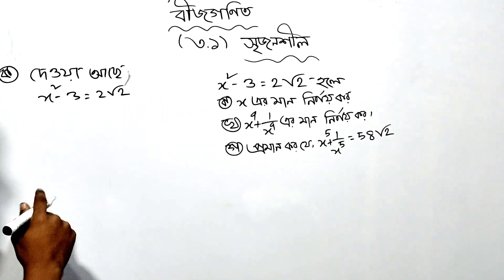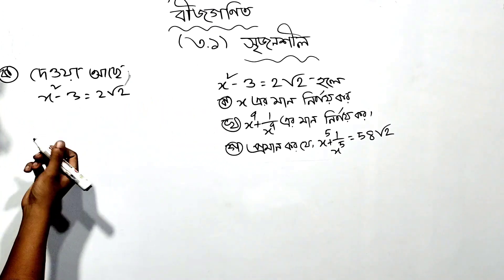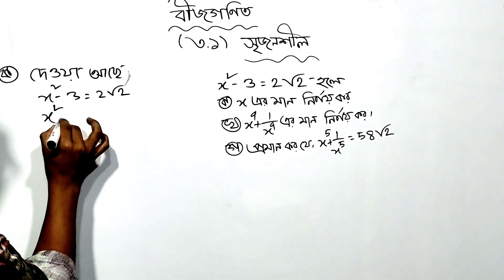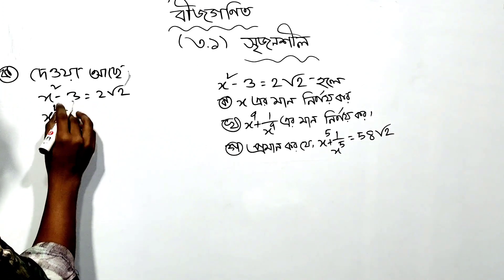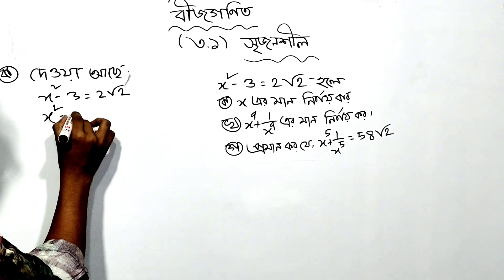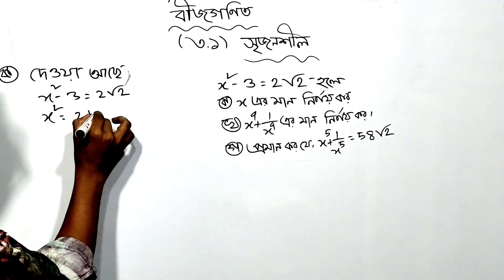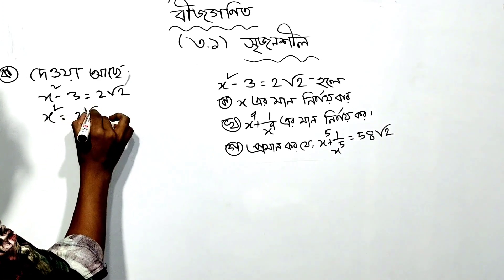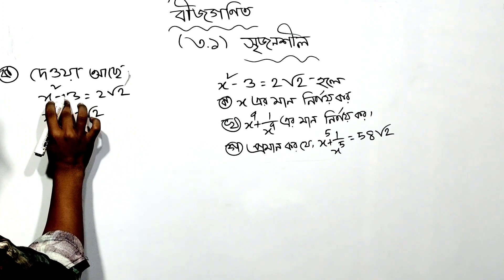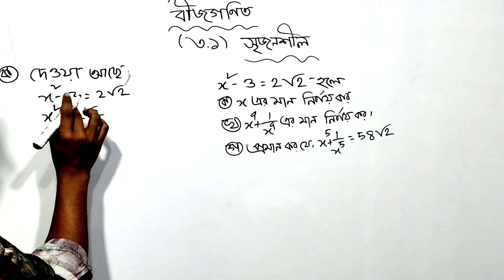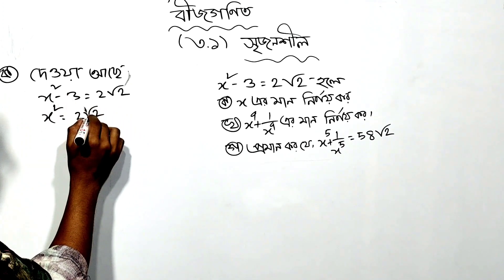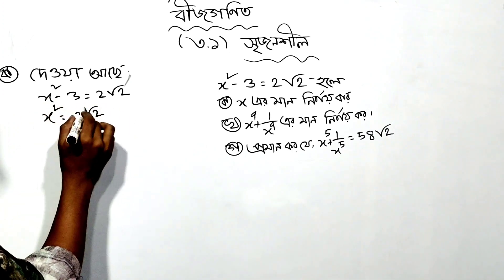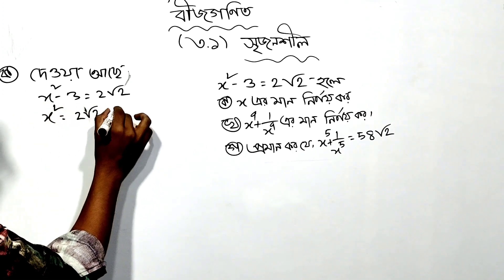We can see that x squared minus 3 equals root 2. And 2 root 2 times x squared minus 3 plus 3...